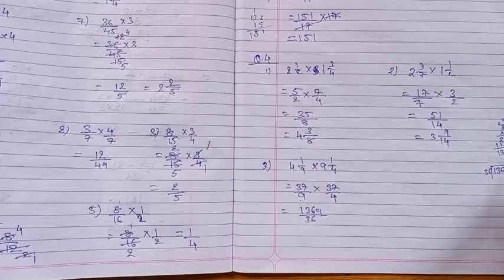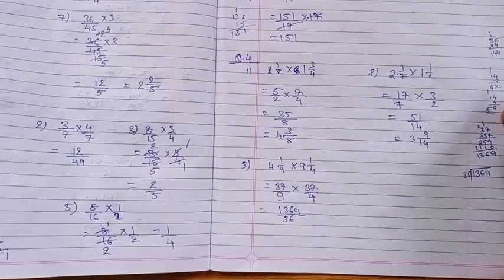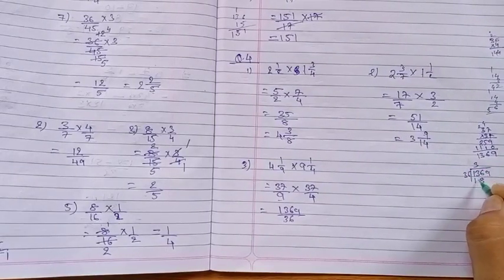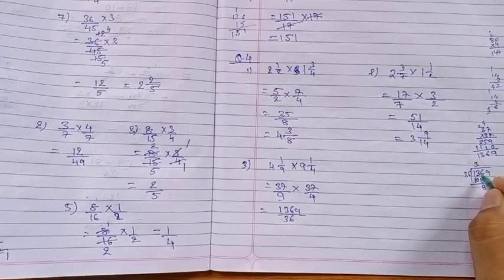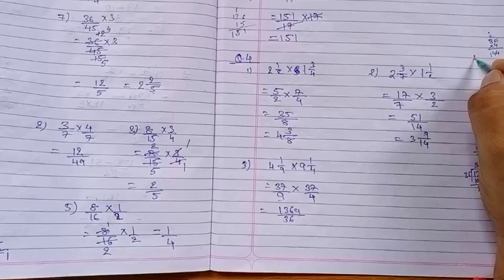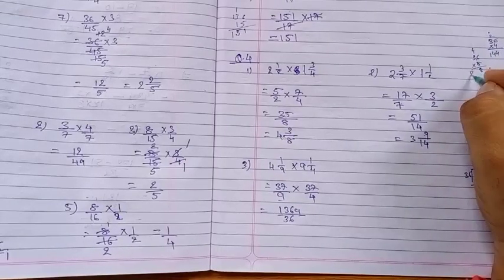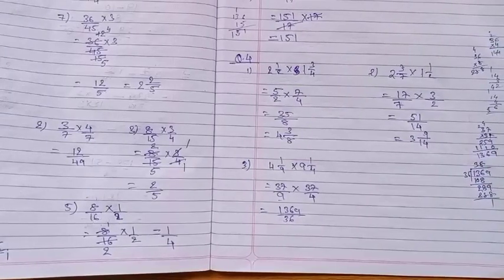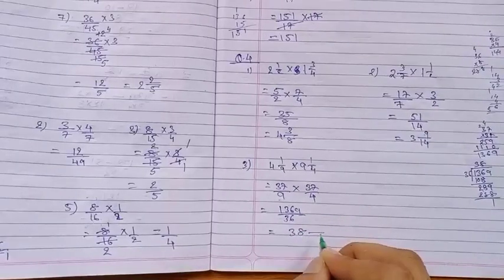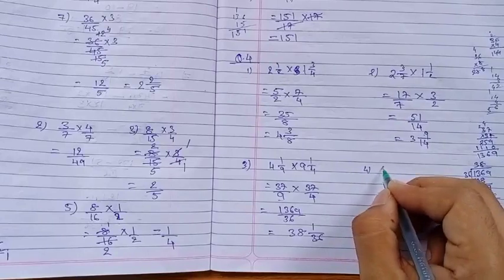Now divide 1369 by 36. Use the table of 36: 36 fours are 144, so it goes into 136 by 3 — 36 threes are 108, remainder 8. Bring down 9: 289. 36 eights are 288, remainder 1. So the answer is 38 and 1 upon 36.